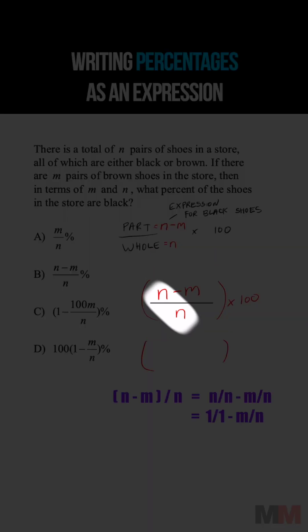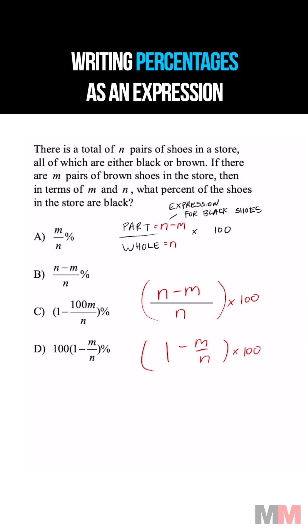We can split this up as n over n minus m over n times 100, which simplifies to 1 minus m over n times 100. That's the expression for black shoes as a percent. The answer is choice D.